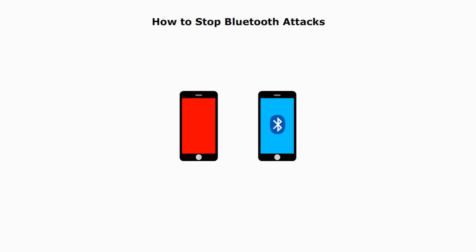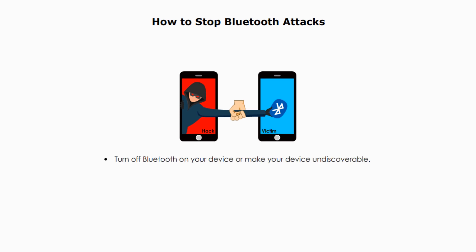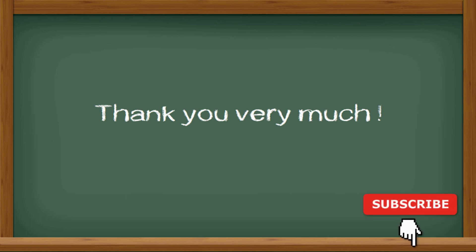How to stop Bluetooth attacks. First, turn off Bluetooth on your device or make your device undiscoverable. Second, stop passive connections — never accept a pairing request from a source you don't know or trust. Last, just be careful and beware of your surroundings. I hope this video is helpful. Thank you very much and see you next time.